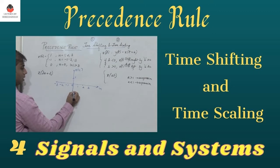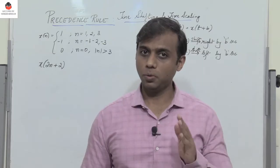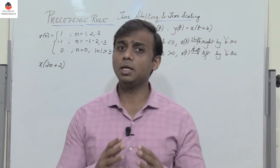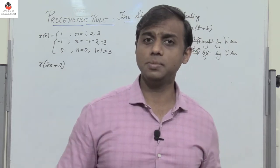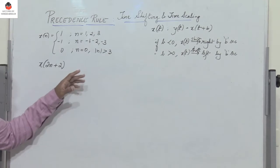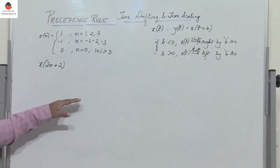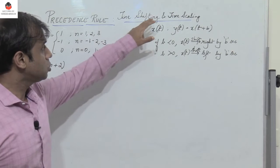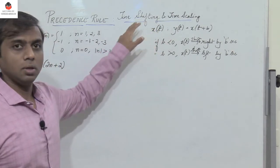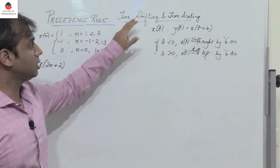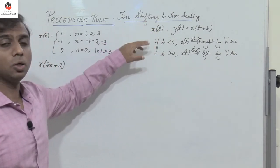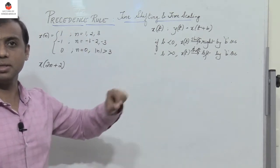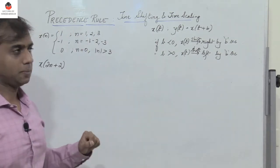Hello friends. After having gone through both time shifting and time scaling, now if I need to apply both time shifting and time scaling to a given signal x of t or x of n, what is the rule I need to follow? Now these two processes — time shifting and time scaling — cannot be done in any order. So there is a specific precedence which is followed.